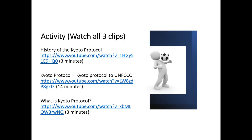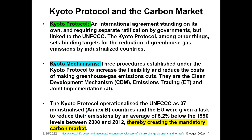In section four, participants are asked to watch three short clips: the history of the Kyoto Protocol (3 minutes), the Kyoto Protocol to the UNFCCC (14 minutes), and what is the Kyoto Protocol (3 minutes). The Kyoto Protocol is an international agreement requiring separate ratification by governments but linked to the UNFCCC. Among other things, the Kyoto Protocol set binding targets for the reduction of greenhouse gas emissions by industrialized countries. Its commitment period has ended and new mechanisms have come in. The Kyoto Protocol's three procedures — established to increase flexibility and reduce the cost of making greenhouse gas emission cuts — include the Clean Development Mechanism (CDM), Emissions Trading (ET), and Joint Implementation (JI).